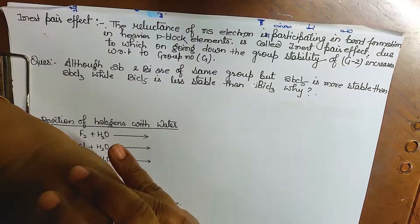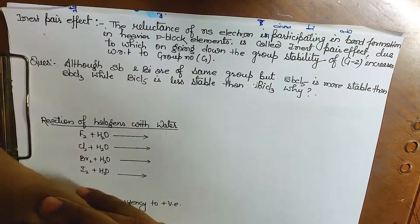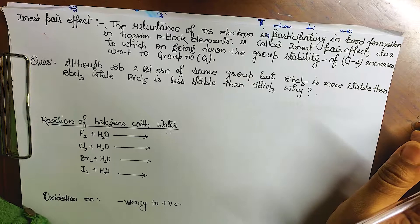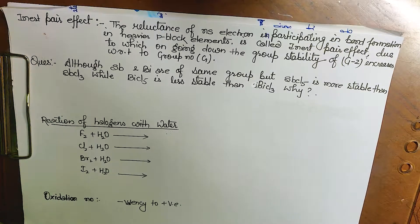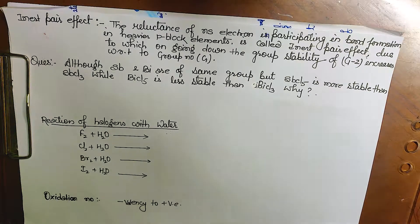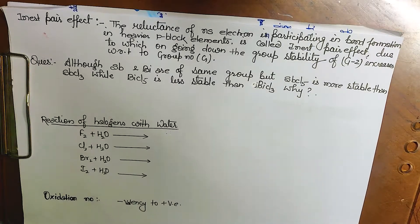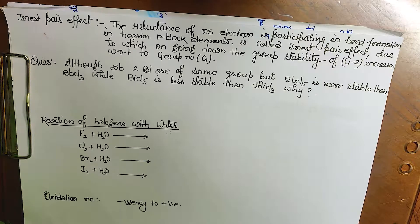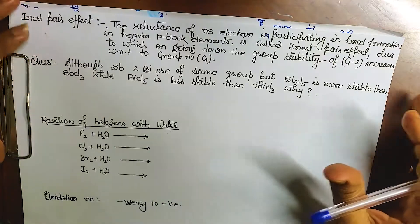Good morning class. In my previous lecture I explained the covalent character of the halides of the 14th and 15th group, discussing Fajan's rule and related concepts. That leads us to a new topic called the Inert Pair Effect.